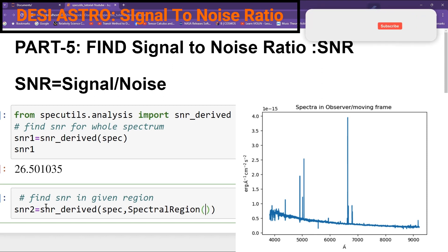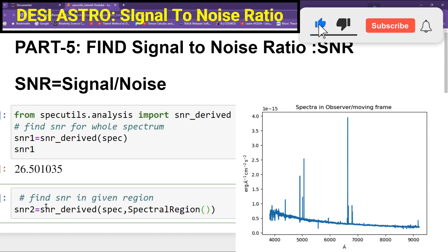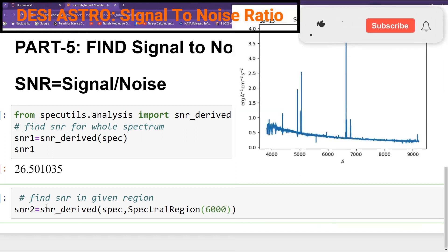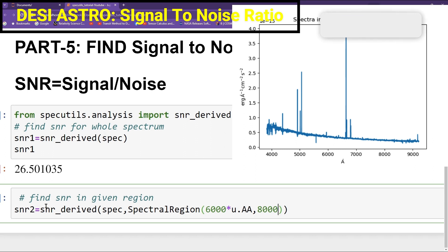Suppose you can see in my Spectra, I want to give a region from 6,000 or unit icon give 8,000 Angstrom to 8,000 Angstrom.